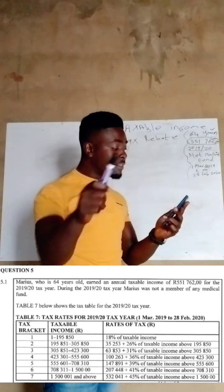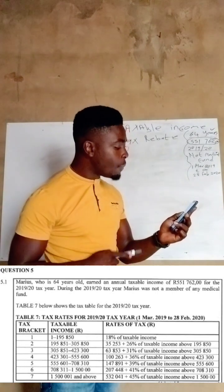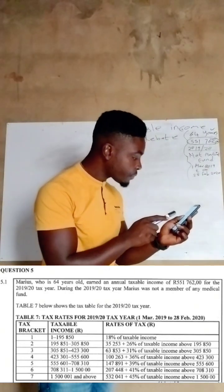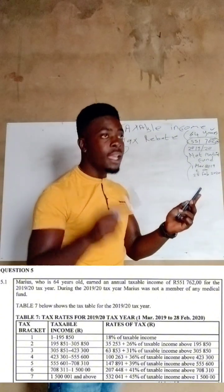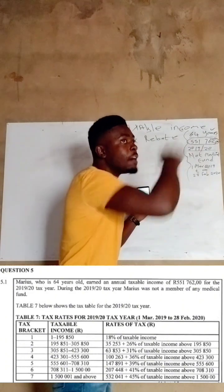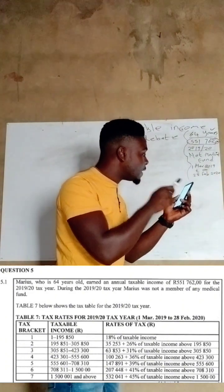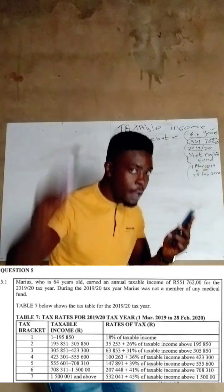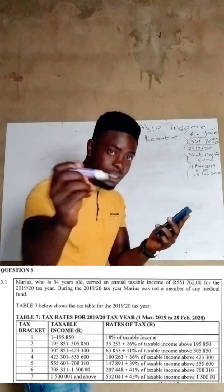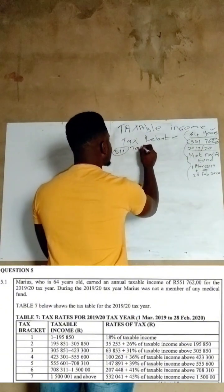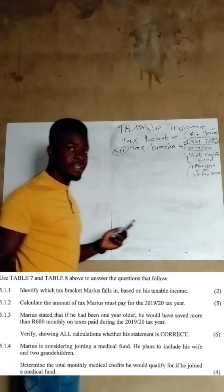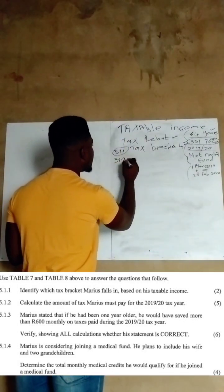Marius falls under tax bracket number 4, which covers taxable incomes from R423,301 to R555,600. Since R551,762 falls between those two amounts, Marius is in bracket 4. That earns you two marks.